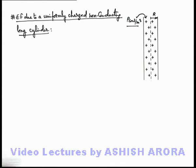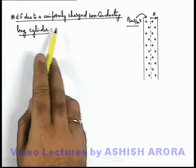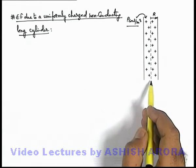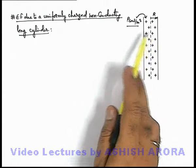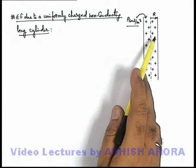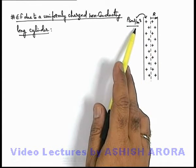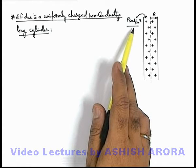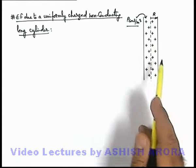Let's discuss the electric field due to a uniformly charged non-conducting long cylinder. The figure shows a long cylinder of radius r which is uniformly charged in its volume with a volume charge density ρ (rho) coulombs per meter cube. We are required to find the electric field strength in its surrounding.